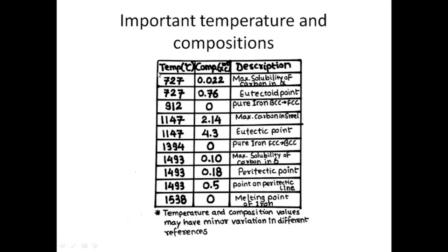The first temperature is 727 degrees Celsius. At 727 degrees Celsius and 0.022 weight percentage carbon, we have a point which shows maximum solubility of carbon in alpha ferrite. At the same temperature, at 0.76 weight percentage carbon, we have the eutectoid point.